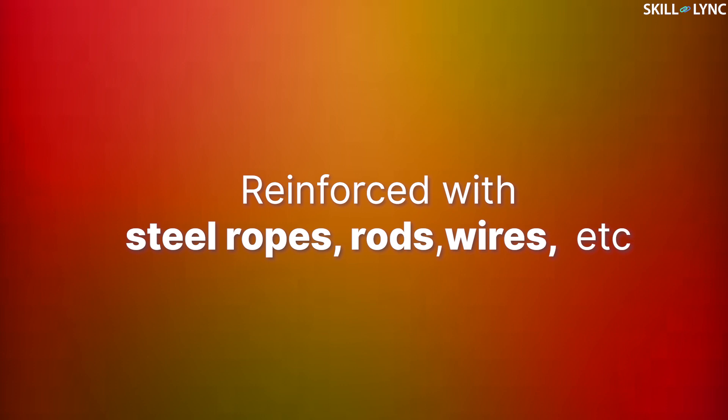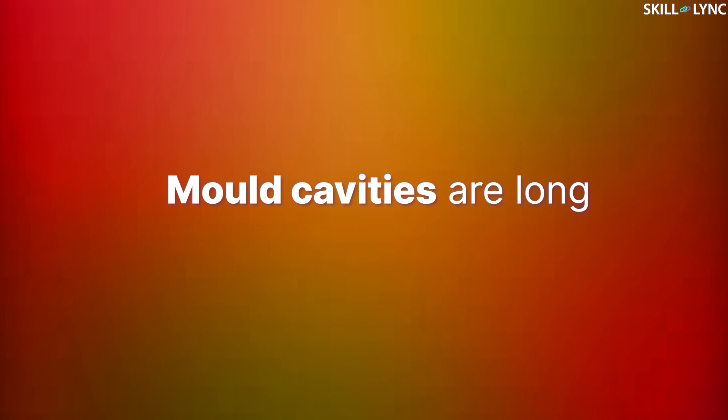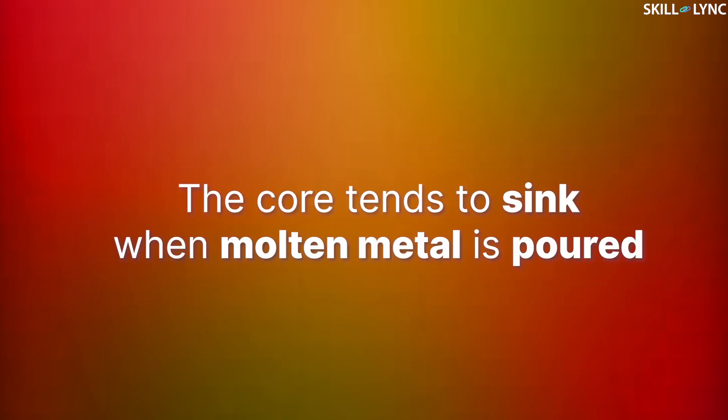As you might know, there are cases where the mold cavities are long to create a full horizontal cavity. In such components, the core must be long too. When the core is long and the distance between the end supports is large, the core tends to sink when molten metal is poured.